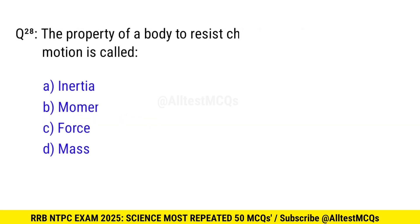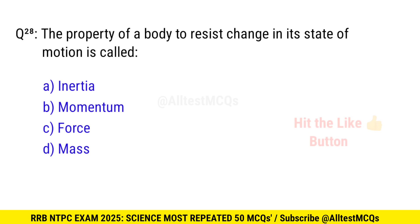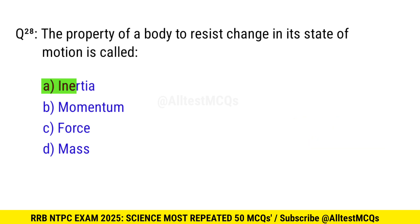Question 28. The property of a body to resist change in its state of motion is called? Right option is A, inertia.